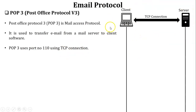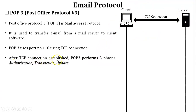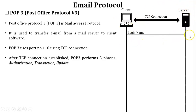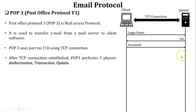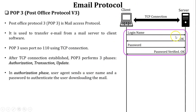As shown in the diagram, a TCP connection is established between the client and the server. After the TCP connection is established, POP3 performs three phases: authorization, transaction, and update. In the authorization phase, the client logs into the server by providing a username. The server verifies the username and sends an OK message. If correct, the client enters the password, which is verified at the server side, and login is completed successfully.